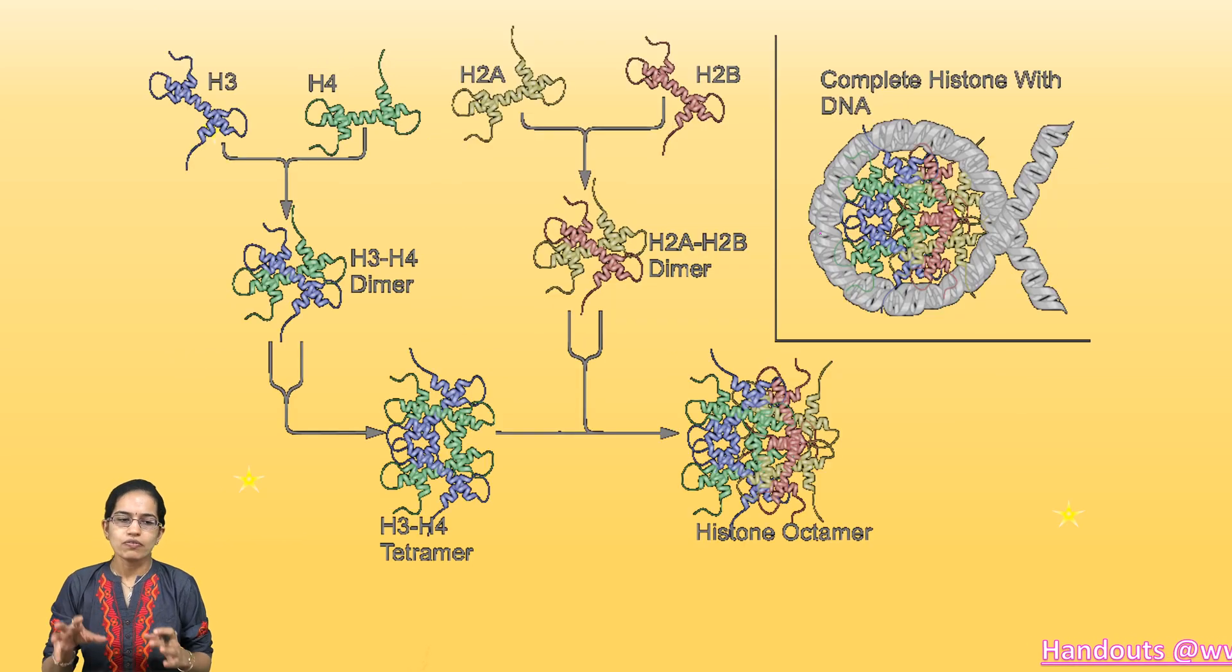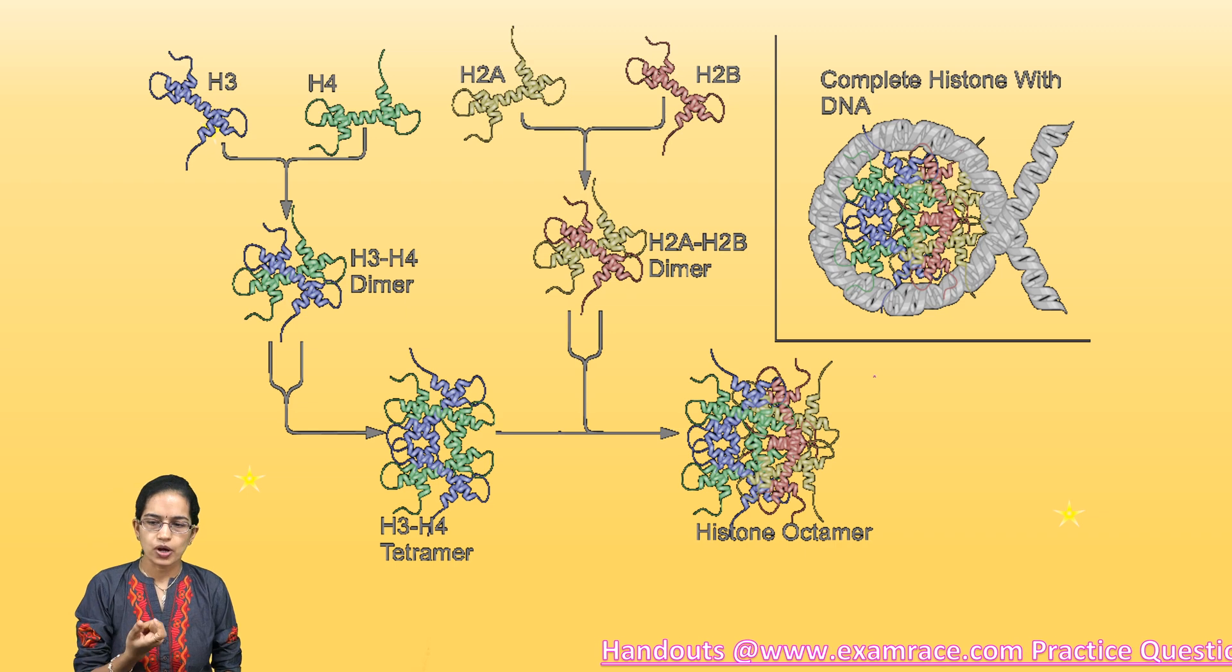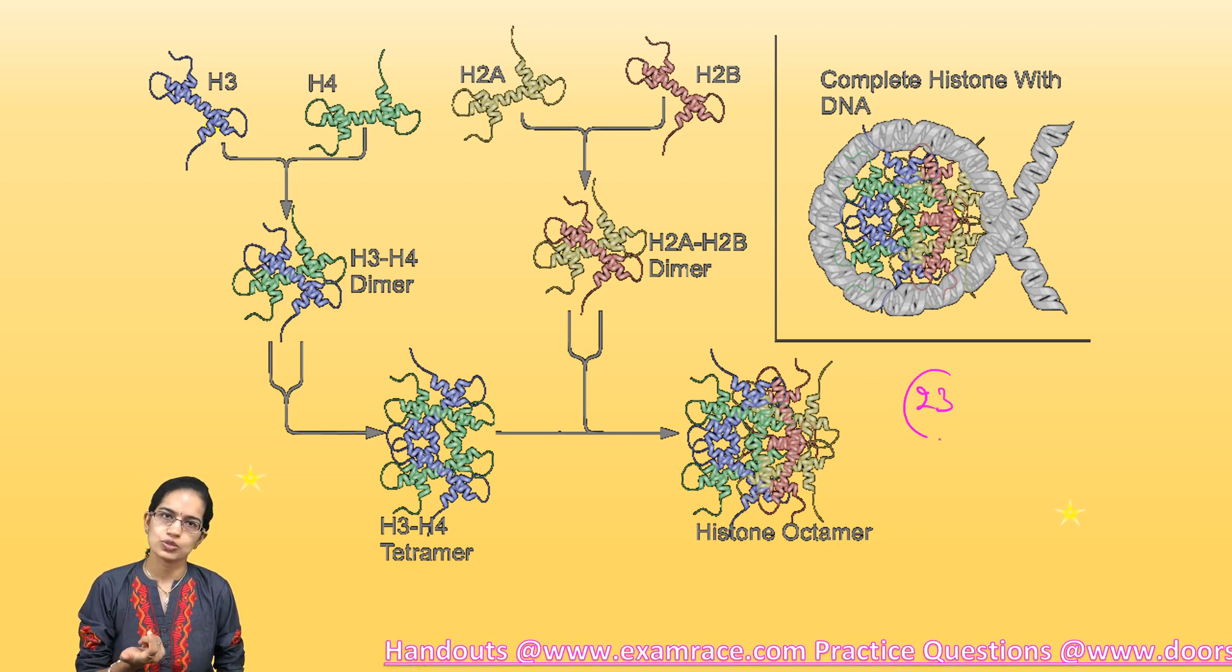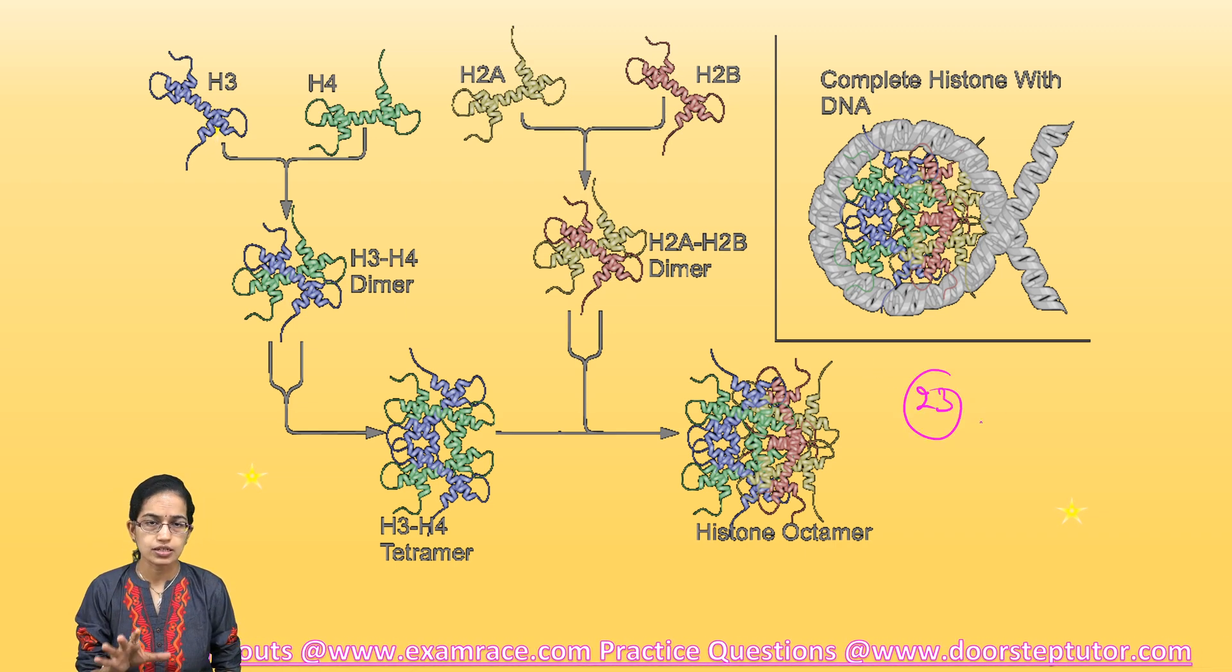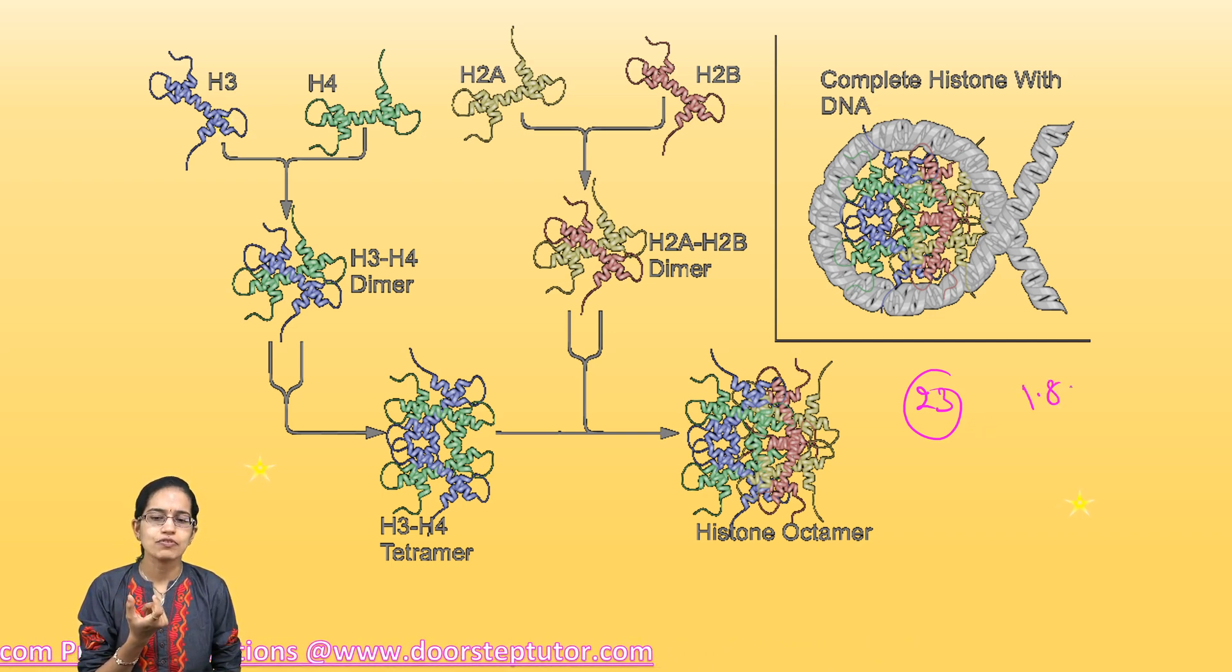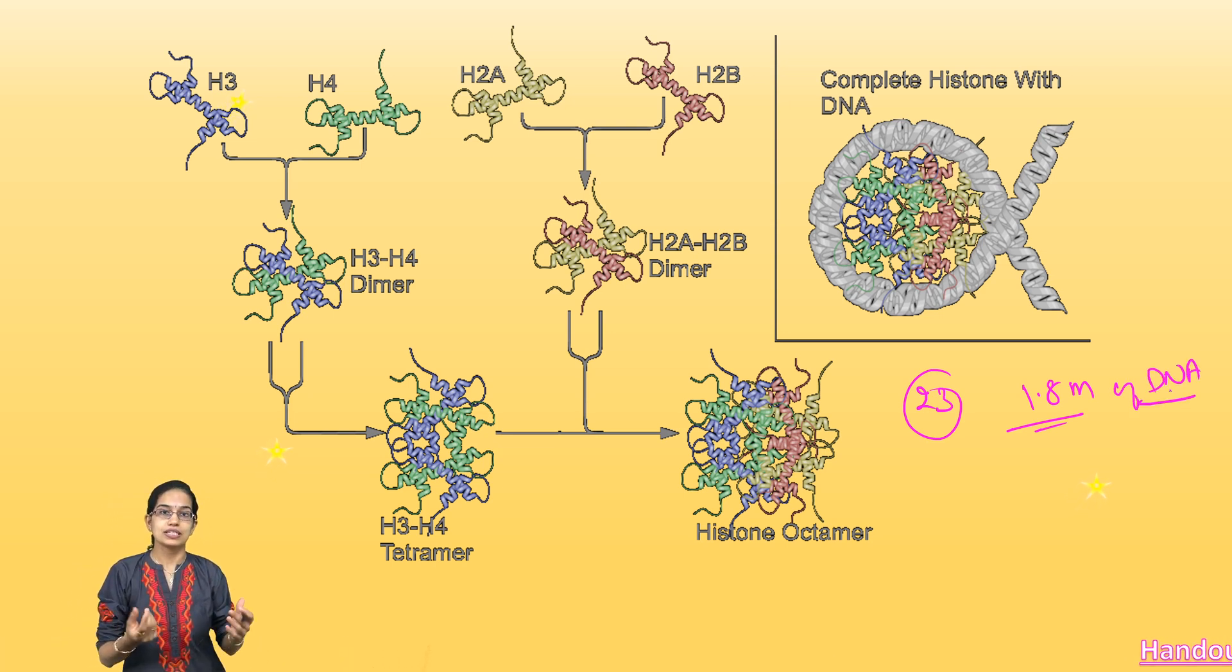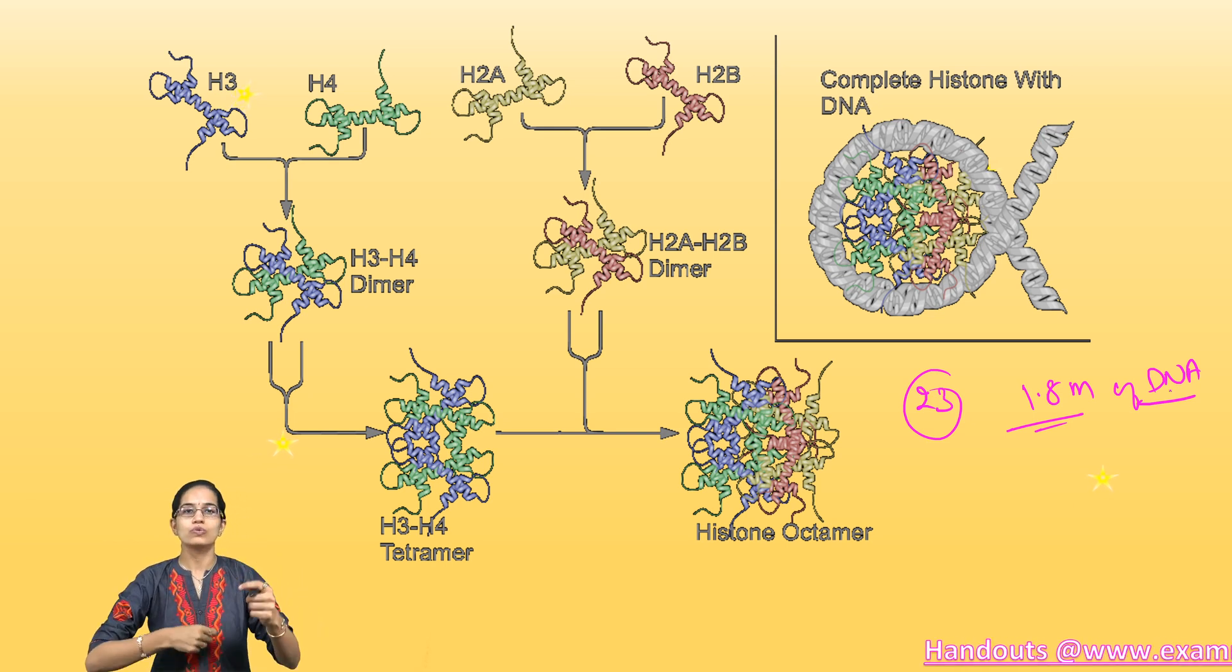When we are talking about a human diploid cell, this diploid cell has how many pairs of chromosomes? You already know it has 23 pairs of chromosomes. Now each of this has nearly 1.8 meters of DNA that is present. This DNA is wrapped around the histone.